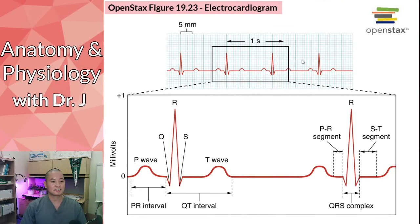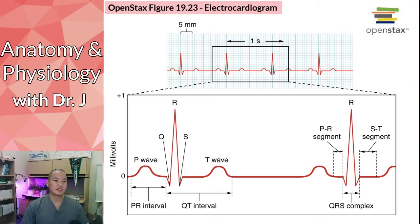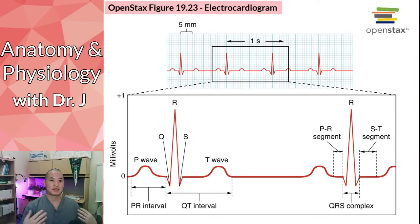On an electrocardiogram, you see this repeated pattern in the normal heart — five waves called PQRST. Sometimes there is a sixth wave called the U wave, but that's more for advanced classes. PQRST is what you definitely should know. The reason they're called PQRST is that the person who discovered this started near the middle of the alphabet in case there were more waves to be discovered, and he then realized these five waves just repeat over and over.